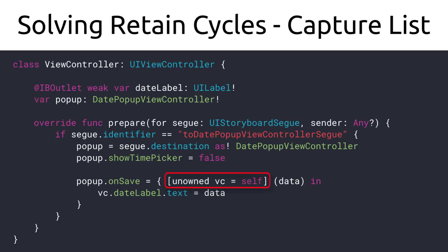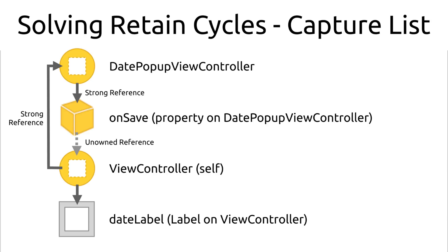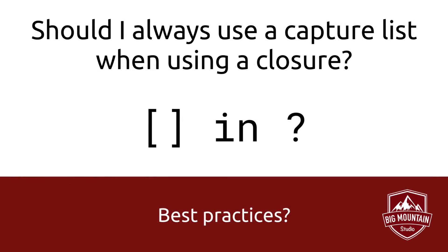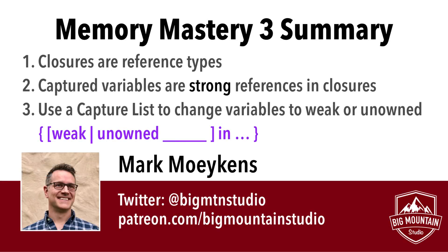Using weak or unowned will break the retain cycle and allow the pop-up and the view controller to release themselves from memory. Looking at the memory graph, inside the capture list on the 'on save' it's now an unowned reference, and it breaks the cycle. You don't have to use a capture list unless you have a retain cycle that needs breaking — capture lists do come with a little overhead, but unowned performs slightly better than weak, and you'll probably never notice it in most apps. With the knowledge from this series, you're now better equipped to identify and fix retain cycles in your apps using a capture list.